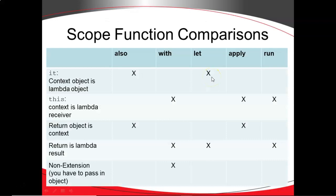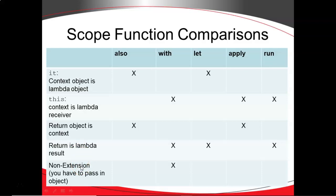One consideration with scope functions is there are several different options on how you use them. For example: how do you refer to the parameter you're operating with — is it `it` or `this`? When you're finished with the scope function, what do you return — the object you're operating on or the lambda result? And finally, is it an extension or non-extension function? Non-extension means you pass the object in as a parameter, while extension means it's a function that operates on an object or class type that already exists.